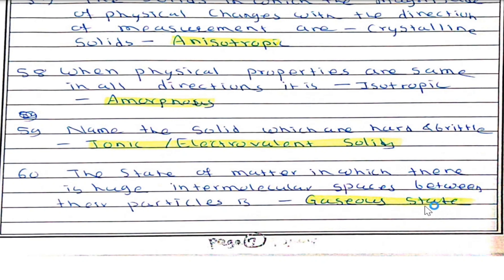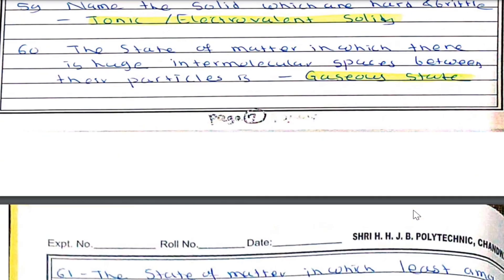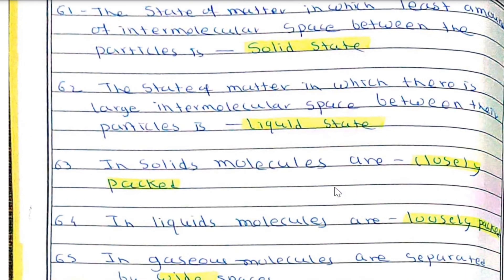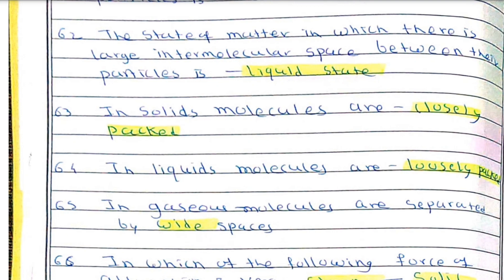The state of matter in which there are huge intermolecular spaces between particles is the gaseous state. The state with the least intermolecular space is the solid state. The state with large intermolecular space is the liquid state. In solids, molecules are closely packed; in liquids, molecules are loosely packed; and in gases, molecules are separated by wide spaces.